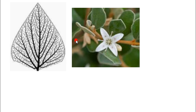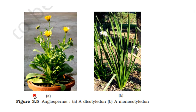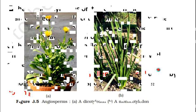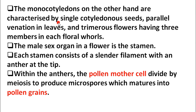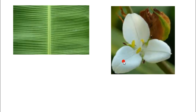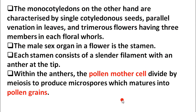As per our NCERT textbook, monocotyledons on the other hand are characterized by a single cotyledon in the seed, parallel venation in leaves, and trimerous flowers having three members in each floral whorl. In dicotyledons there is a large reticulate network of veins, but in monocotyledons the venation is simple and parallel. Keep this difference in mind.